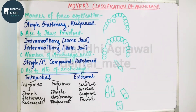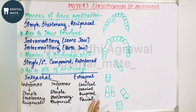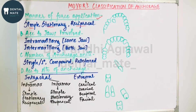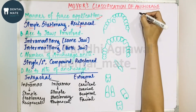There could be three different types of anchorage: simple, stationary, and reciprocal. The first example — in which the canine is retracted and the molar is used as the anchor unit with tipping of the molar — this kind of anchorage that resists the tipping movement of the anchor unit and gets the required movement done is called simple anchorage.